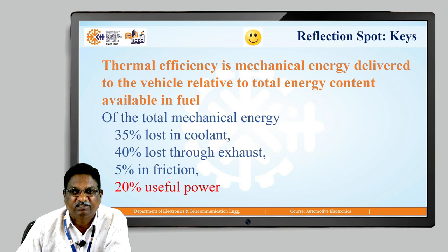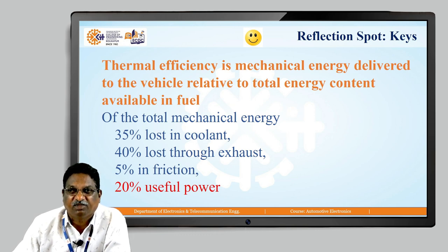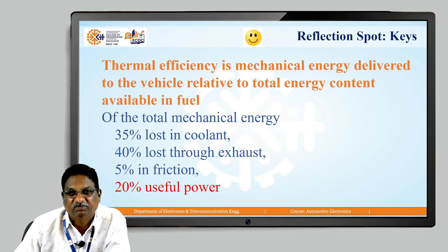The exact answer is 20 percent is the useful power. The thermal efficiency is the mechanical energy delivered to the vehicle relative to the total energy content available in the fuel. Of the total mechanical energy, 30 percent is lost in the coolant, 40 percent is lost through the exhaust, and 5 percent is lost in friction. That sums to 75 percent lost, so only about 20 percent of power is useful.